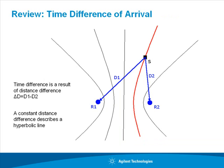Let's first review the basic principles of time difference of arrival geolocation. Here we have two receivers, R1 and R2, and a signal source S. The signal will arrive at the receivers with a time difference that is a result of the difference in distance between the signal source and each of the receivers. Knowing the difference in distance tells us that the signal emitter must be somewhere on the hyperbolic line shown in red.